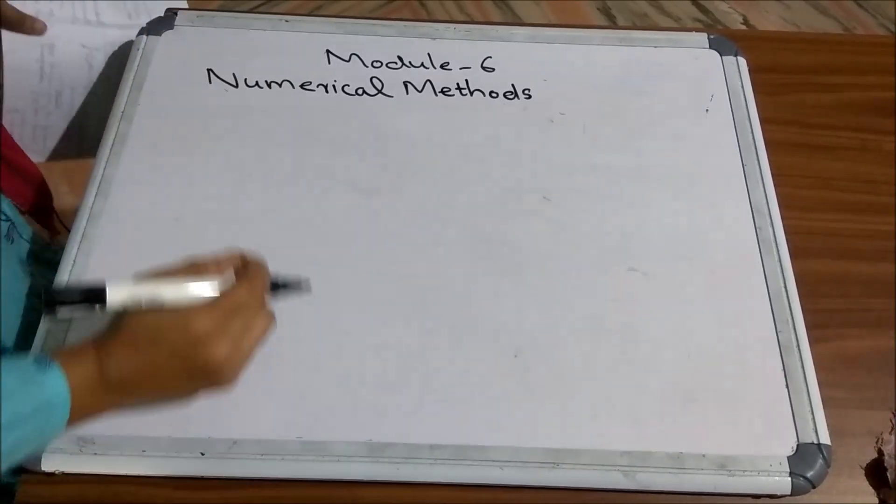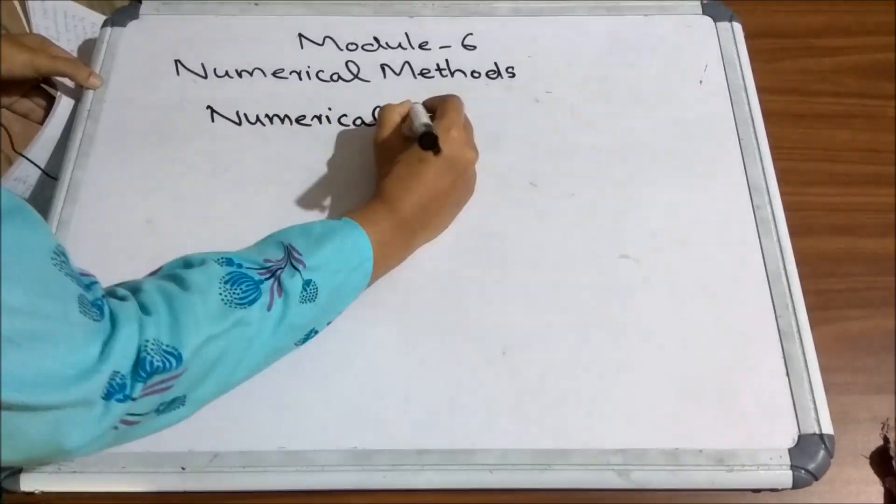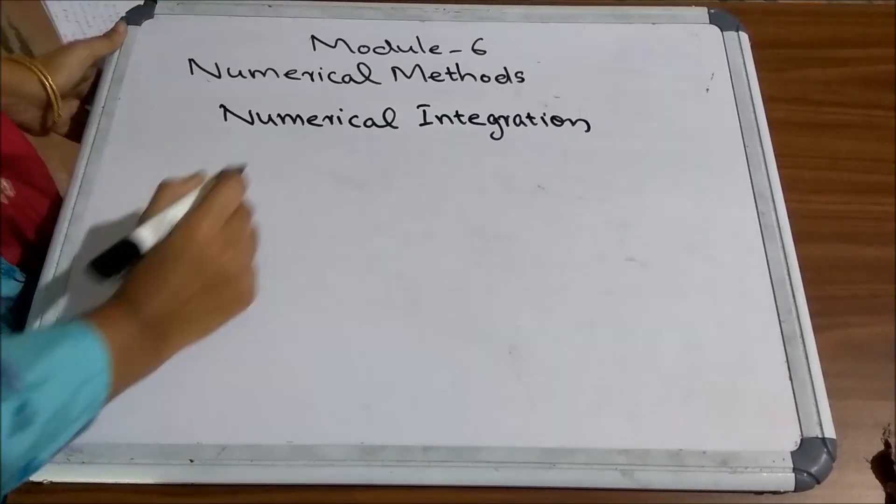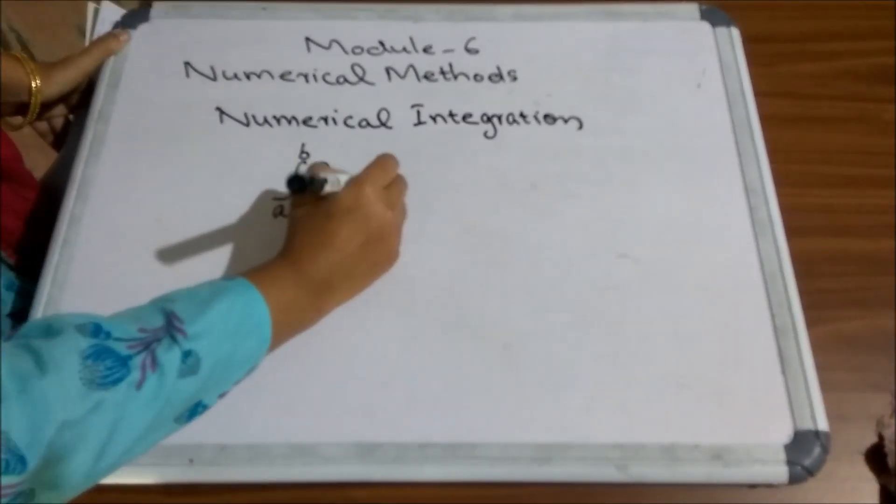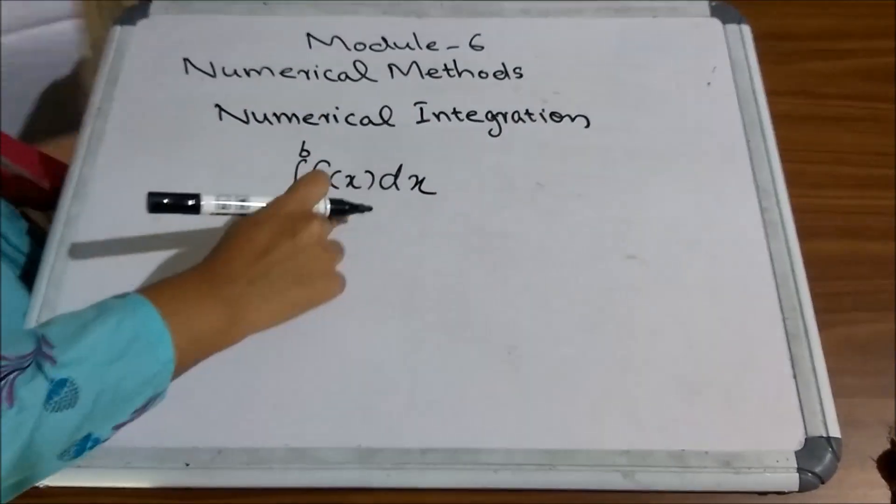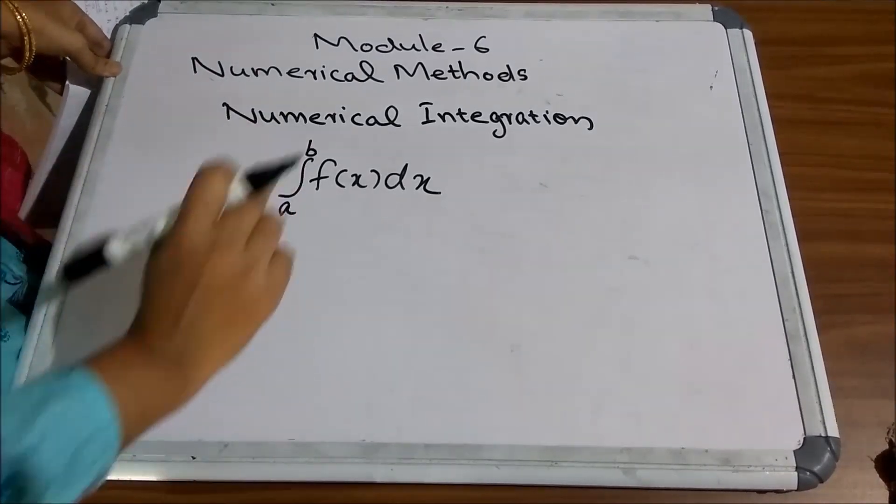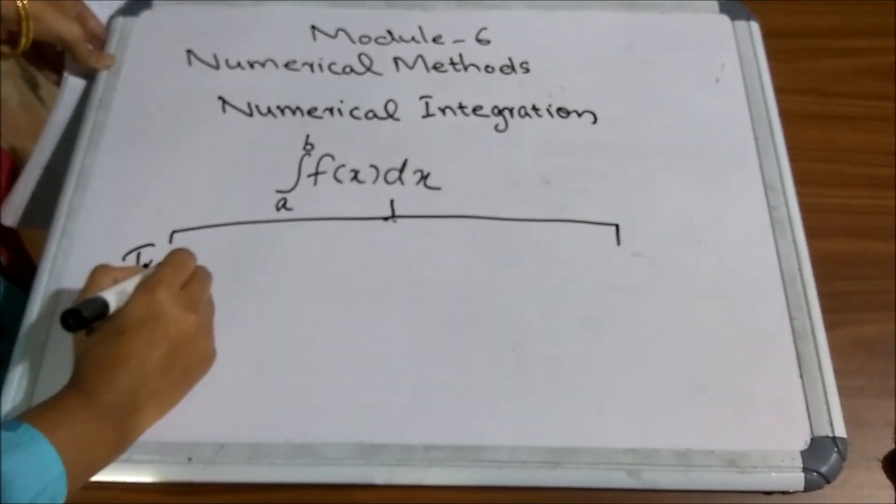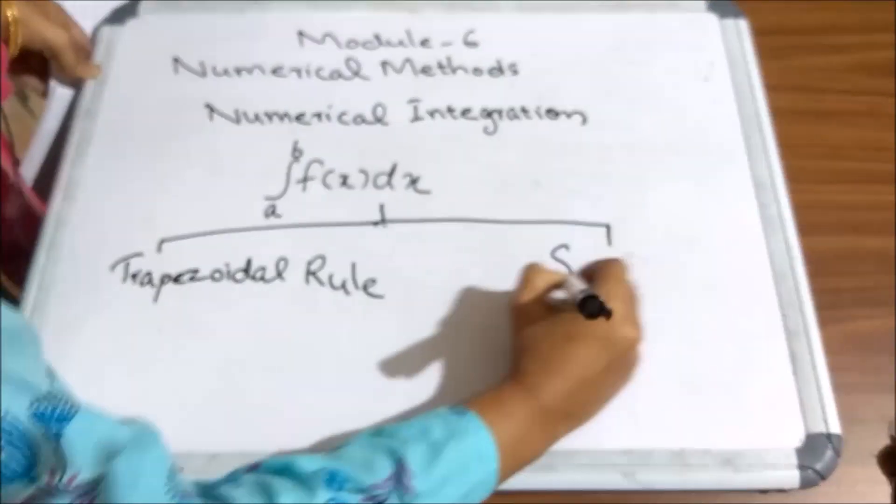In Numerical Methods, first we are going to discuss Numerical Integration. In Numerical Integration, we can evaluate the integral of the form integral a to b f of x dx, where f of x is a function, a is the lower limit and b is the upper limit. For Numerical Integration, we are discussing 2 methods. The first method is Trapezoidal Rule and the second one is Simpson's Rule.